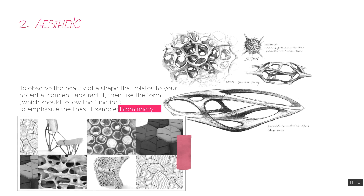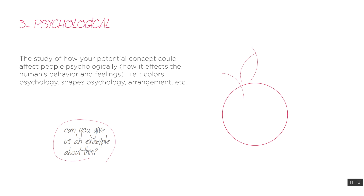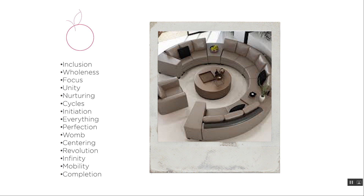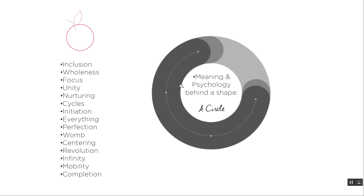The third type of concept is psychological, and it's also widely used because it affects how people interact within the space. It's basically the study of how a potential shape or form could affect people psychologically — how it affects human behavior and feelings, like color psychology, shape psychology, and arrangement. My example was a circle. If you create your design around a circle, say a circular sofa where people are sitting together, it evokes inclusion, wholeness, focus, and unity. This is the meaning of thinking deeper than just colors, materials, and furniture — you are studying how people will feel within a space.